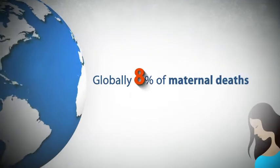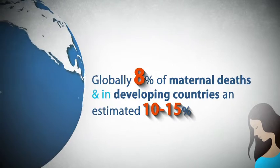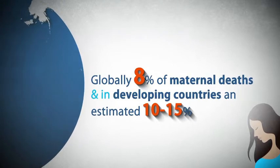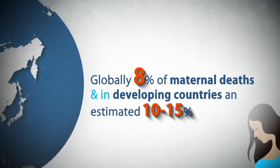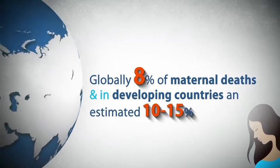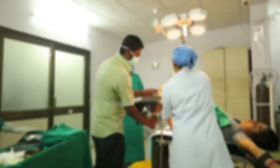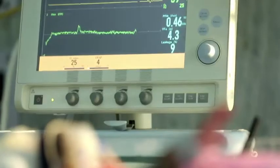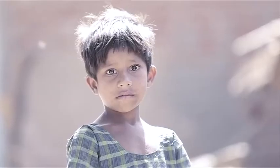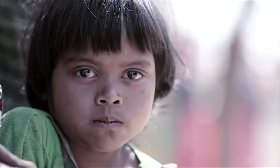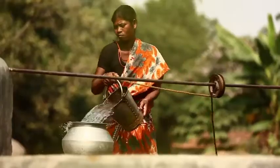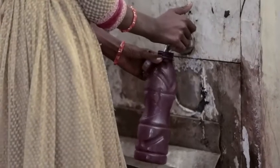Globally, 8% of maternal deaths — and in developing countries an estimated 10-15% — are due to infections that can be directly linked to unhygienic conditions during labour and birth and to poor hygiene practices after birth. Approximately half a million children die every year due to diarrheal disease caused by unsafe water, poor sanitation, and poor hygiene practices.